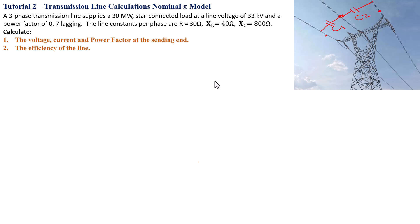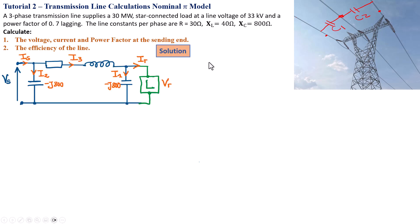In this tutorial we're going to use a nominal pi model to solve a problem where we've got a three-phase transmission line that supplies 30 megawatt of power with a star-connected load. The line at the receiving end is 33 kilovolt with a power factor of 0.7 lagging. The line constants — per phase parameters of the impedances and capacitance — are given. The circuit has capacitors at both ends with a series impedance, and this is a single phase representation of the pi model.